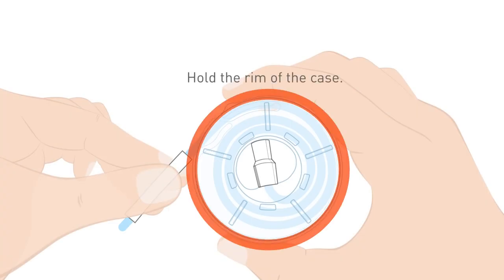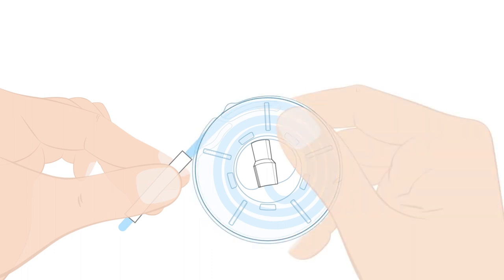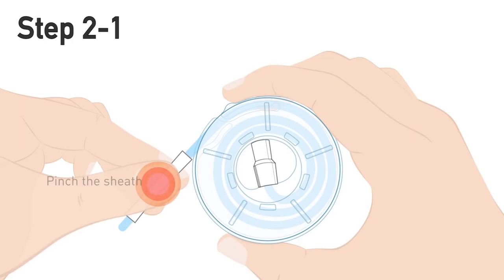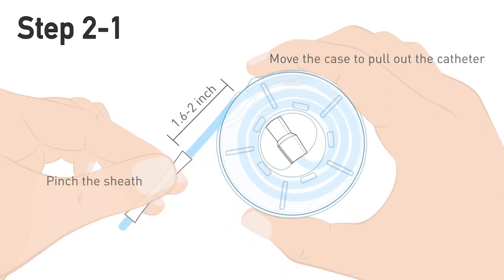Make sure you hold the catheter by the rim. Holding or pinching the body of the case will block the catheter from being pulled out. Use the sheath to gently pull the catheter out of its case.